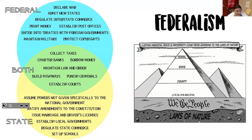Between the federal and state governments, there are shared powers shown in the Venn diagram. Both can collect taxes — parents pay federal taxes, and some states have state taxes. They can create charter banks, borrow money — states borrow from the federal government while the federal government can borrow internationally. Both can maintain law and order with police force and laws. They can also build highways. For example, I-10 is a federal highway maintained by the federal government running from the west coast to the east coast.